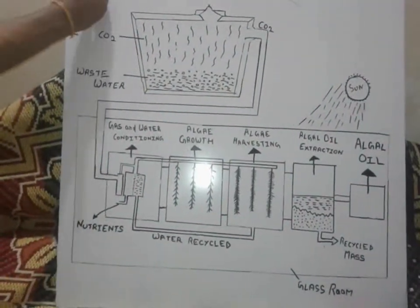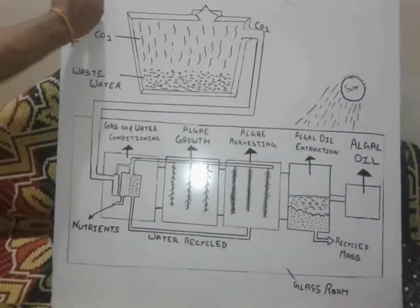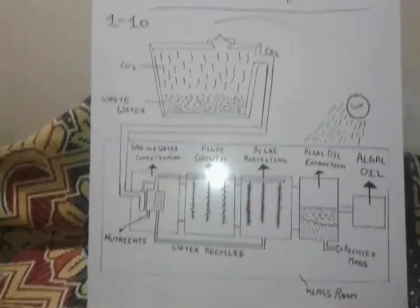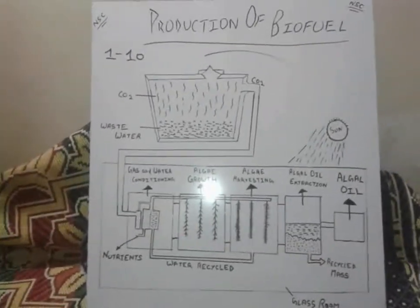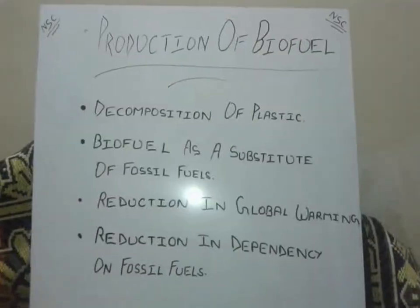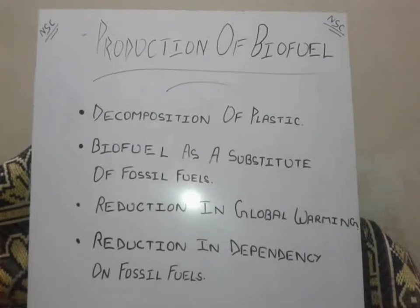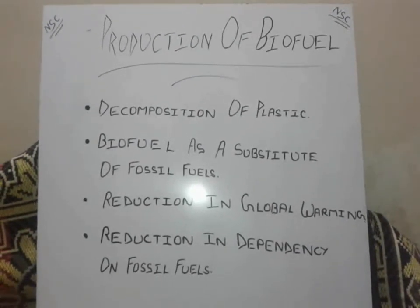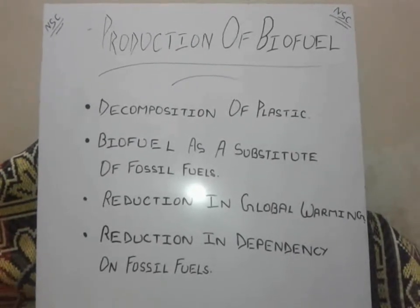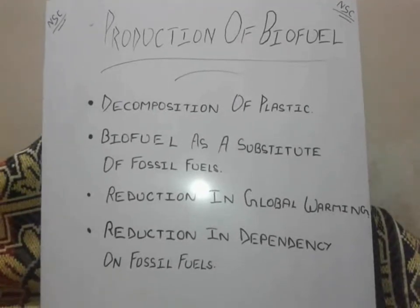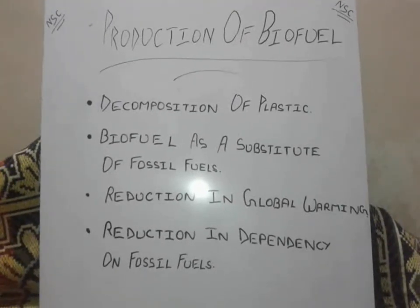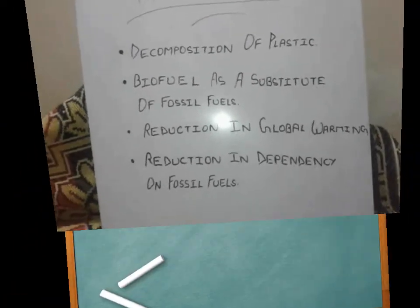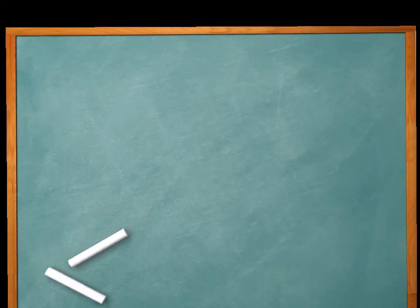Algae has a life cycle of 1 to 10 days, so it can easily be grown throughout the year. These are several advantages of my whole project. Thank you for watching my video — please avoid my handwriting. Thank you.